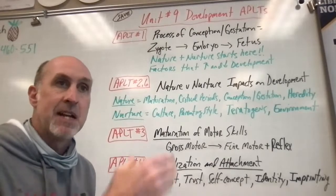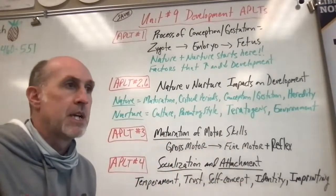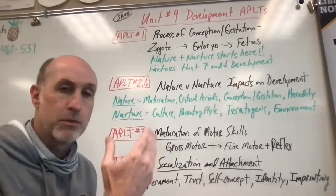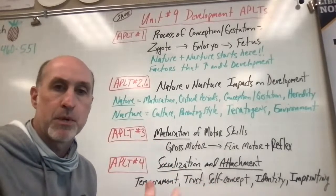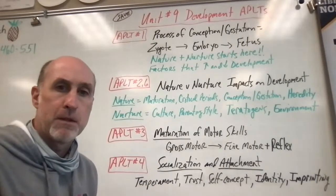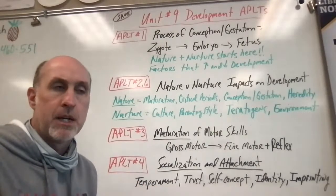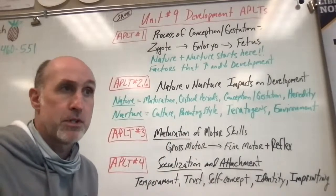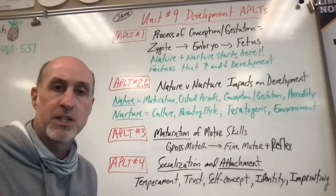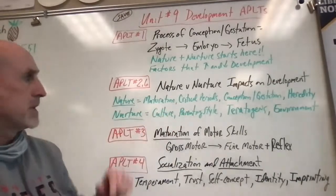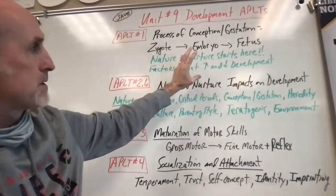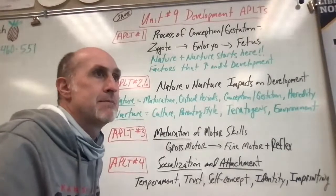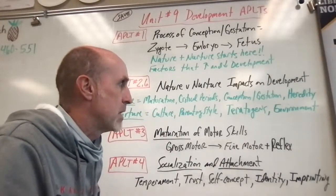Motor development is early on, maybe up to the first two years of life — the brain really wants to set a foundation for motor development during that critical period. Development starts in the womb. On the nurture side, we have culture, which greatly impacts development, parenting style, and teratogens — basically toxins or chemicals that can enter the baby in the womb through the mother or through culture and society. If the mother uses alcohol, smokes, or uses drugs, those can be environmental factors influencing the baby in the womb.